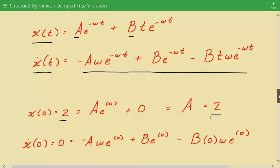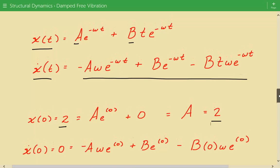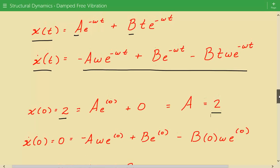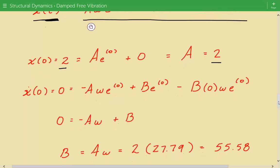Now we need to also solve for B. We know that the velocity is 0 at time equals 0. So we just plug in t equals 0 in this velocity function. And then we can solve for B. So 0 equals negative A times omega plus B. So B equals A times omega. And we know that A equals 2. So 2 times omega. So it's 55.58. B equals 55.58.